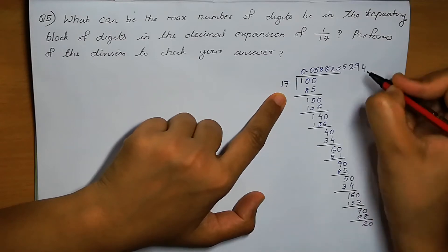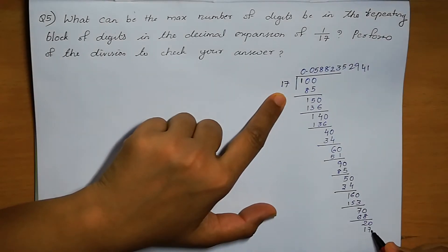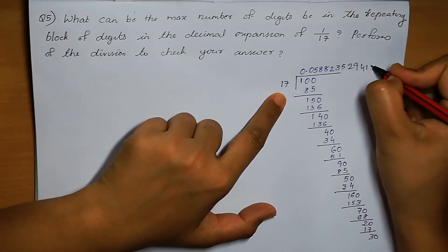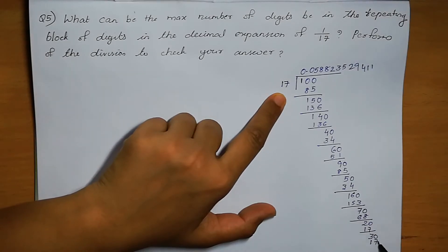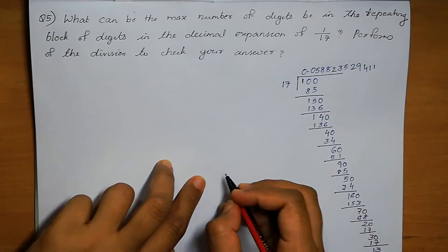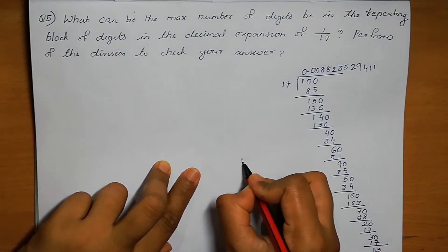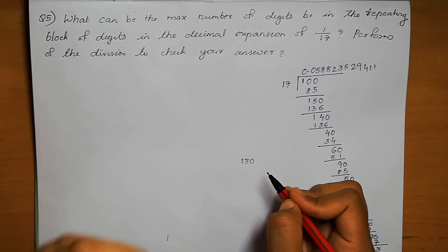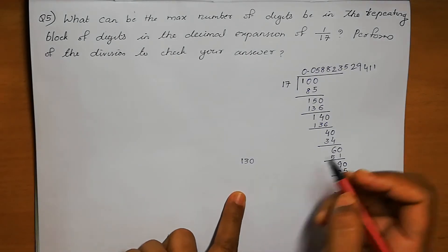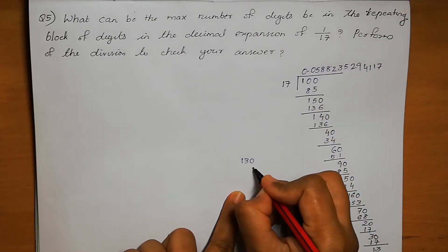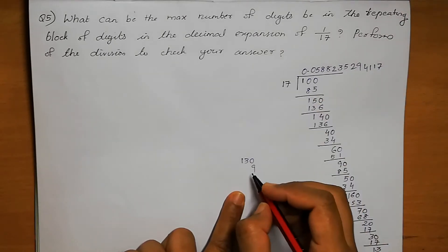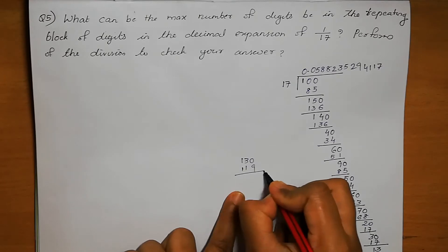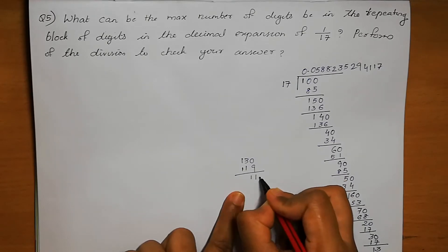20. 1 time. 17. 20, remainder 30. In 30 also, 1 time. 17, remainder 13. So this becomes 130. In 130, how many times? 7 times. 49, remainder 4. Plus 4 is 11. 119. 119. 1. 1. 0.